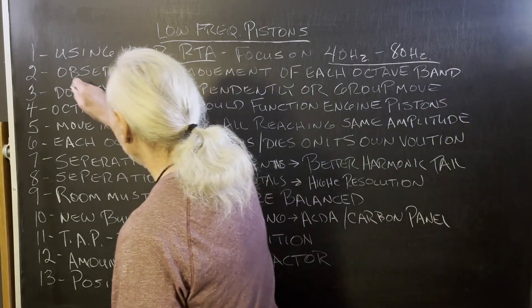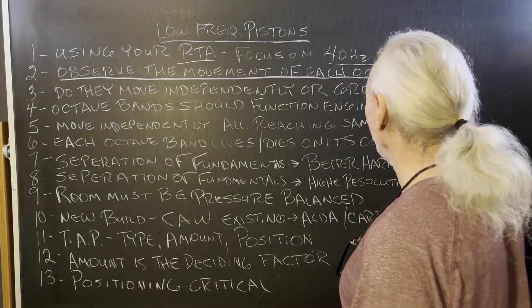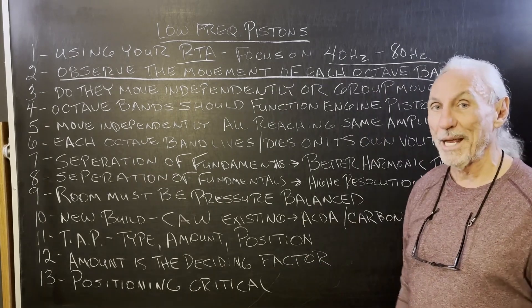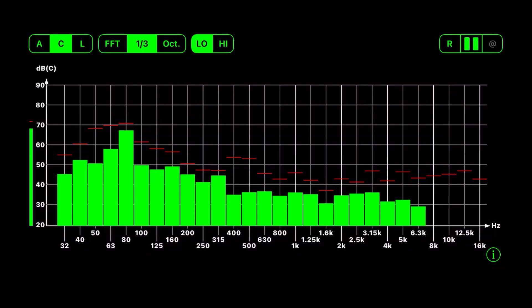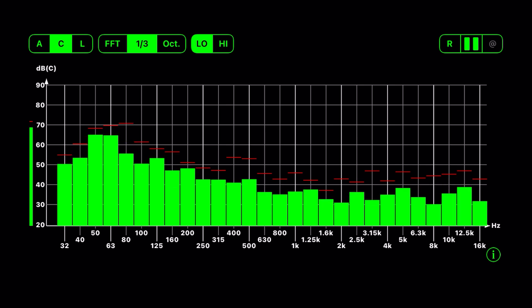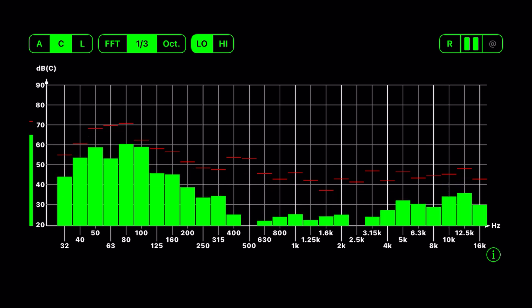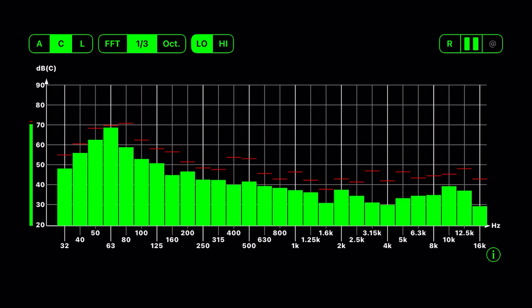We want to observe the movement of each octave band from 40 to 80. We want to see how they move, because with the RTA they're all grouped like this in different octave bands. So we want to watch the movement of each octave band.